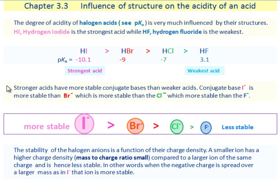Stronger acids have more stable conjugate bases than weaker acids. Conjugate base I- is more stable than Br- which is more stable than Cl- which is more stable than F-.